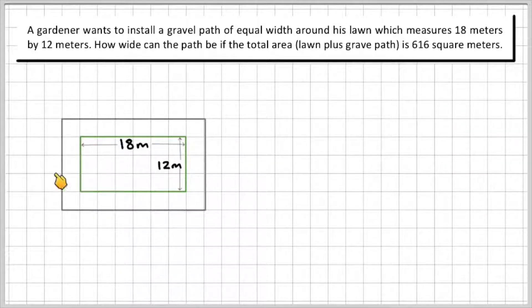So I've just drawn a little diagram here to represent the lawn, which is this part in the middle, and then the gravel path, which is represented by this grey rectangle. Now the path has to have an equal length and an equal width. So I could represent that by doing a little arrow here that represents X and then the same distance on the other side, which also represents X. So the width of the path is equal on all four sides.